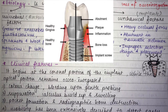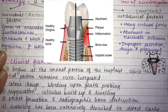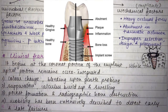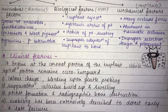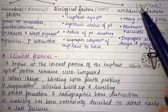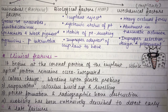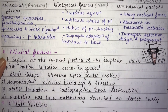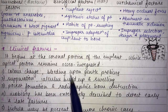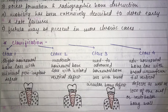You will also see radiographic bone destruction, as peri-implantitis is essentially destruction of bone around the implant. Mobility has been extensively described to detect early and late implant failures. Early failure can occur at surgery, while late failure is due to peri-implantitis. A fistula may be present in more chronic cases.